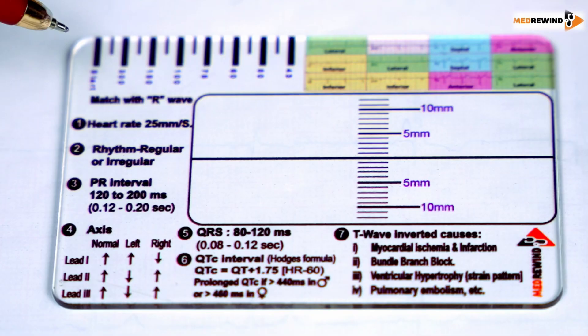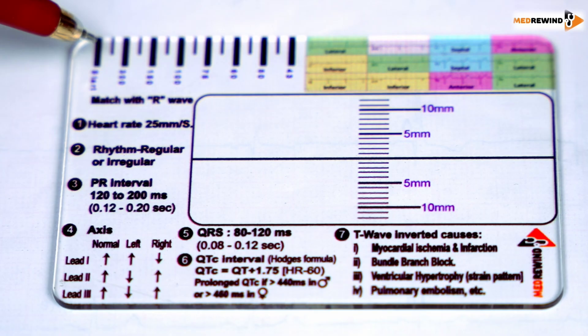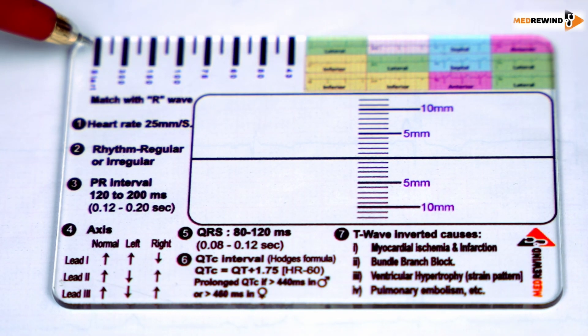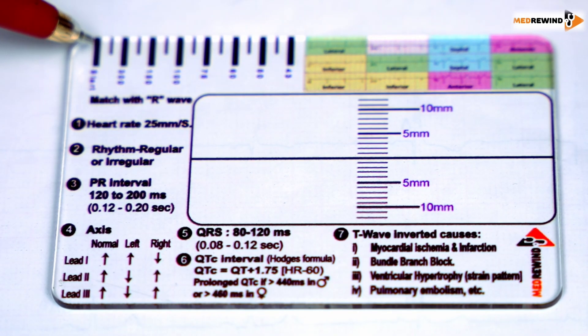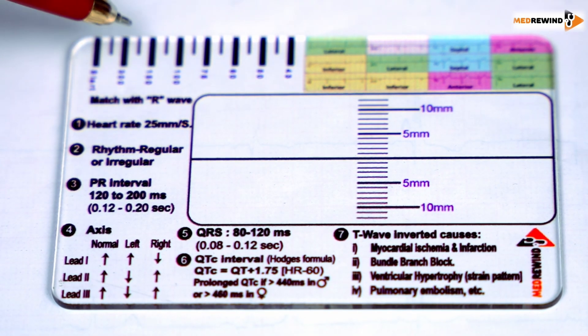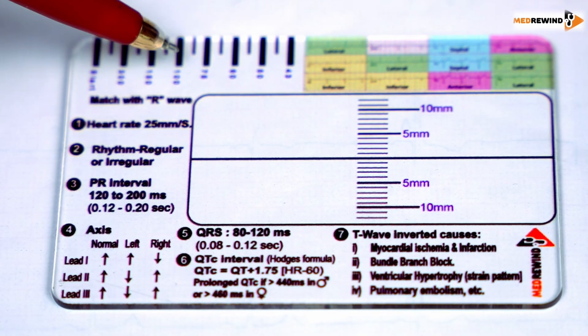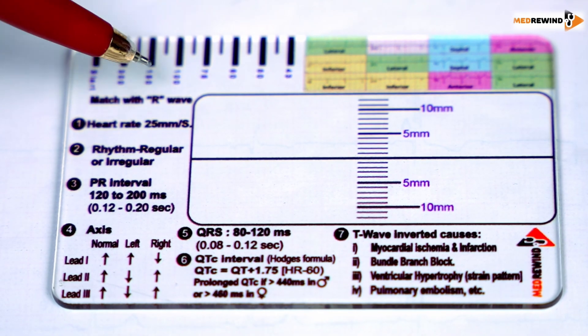Step 1, we are discussing the heart rate. For checking the heart rate, first you need to see that your ECG is running at 25 millimeters per second. You match your QRS complex — specifically the R-wave — with the start point, and see where the next R-wave is, and based on that you can tell the heart rate.